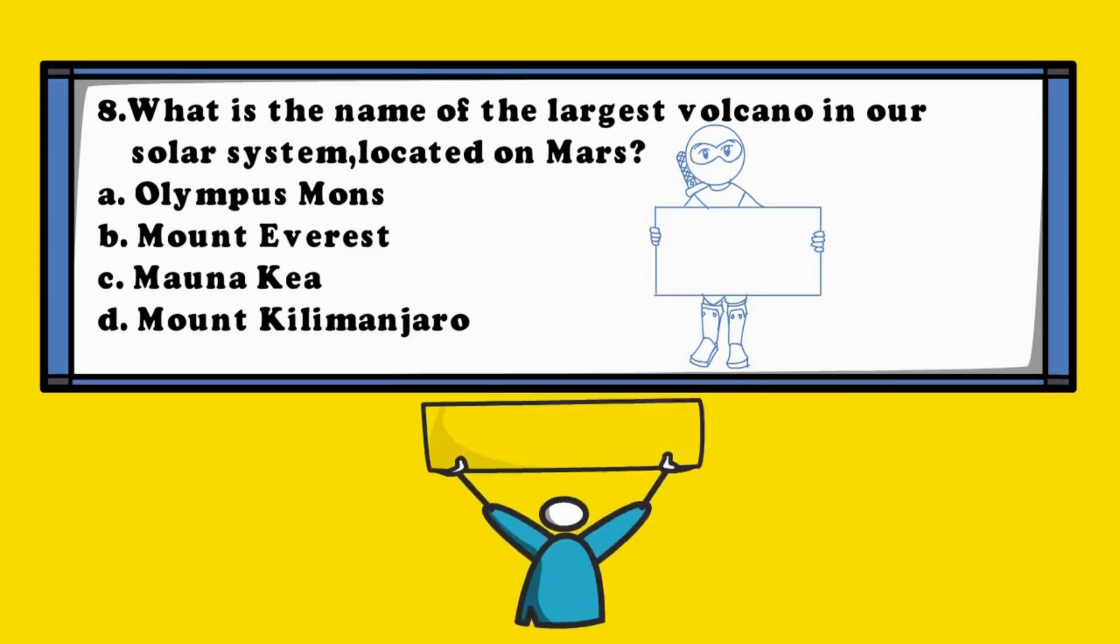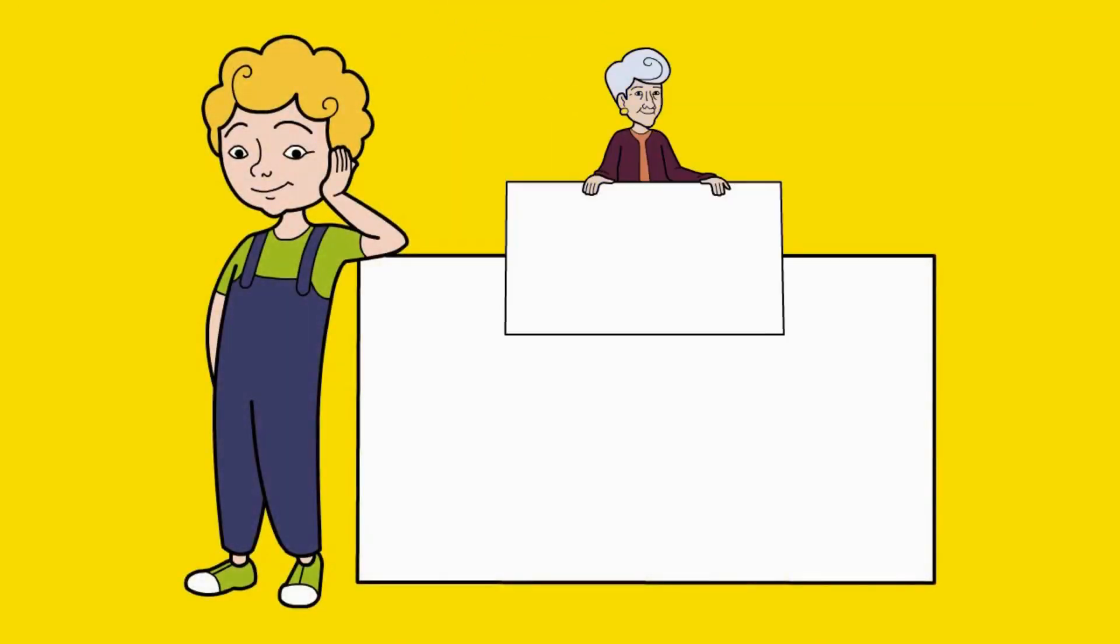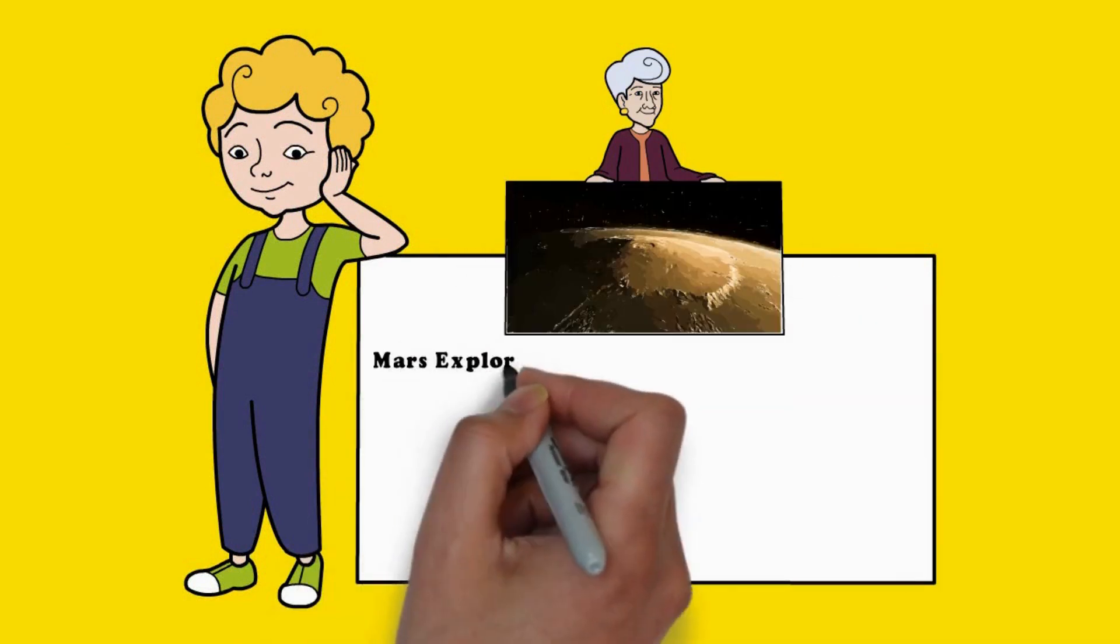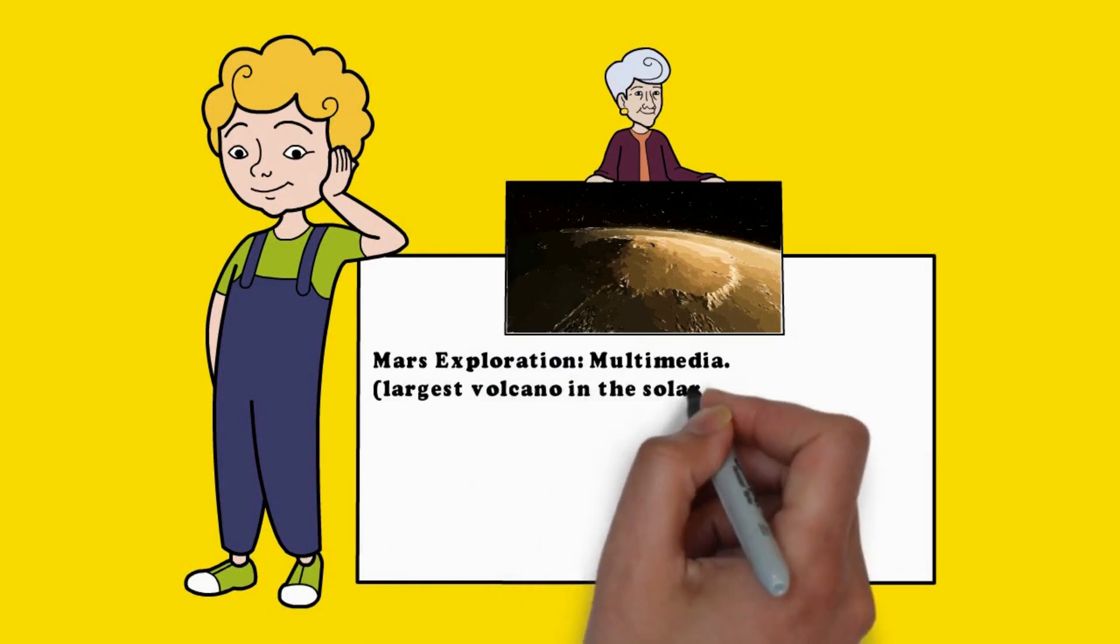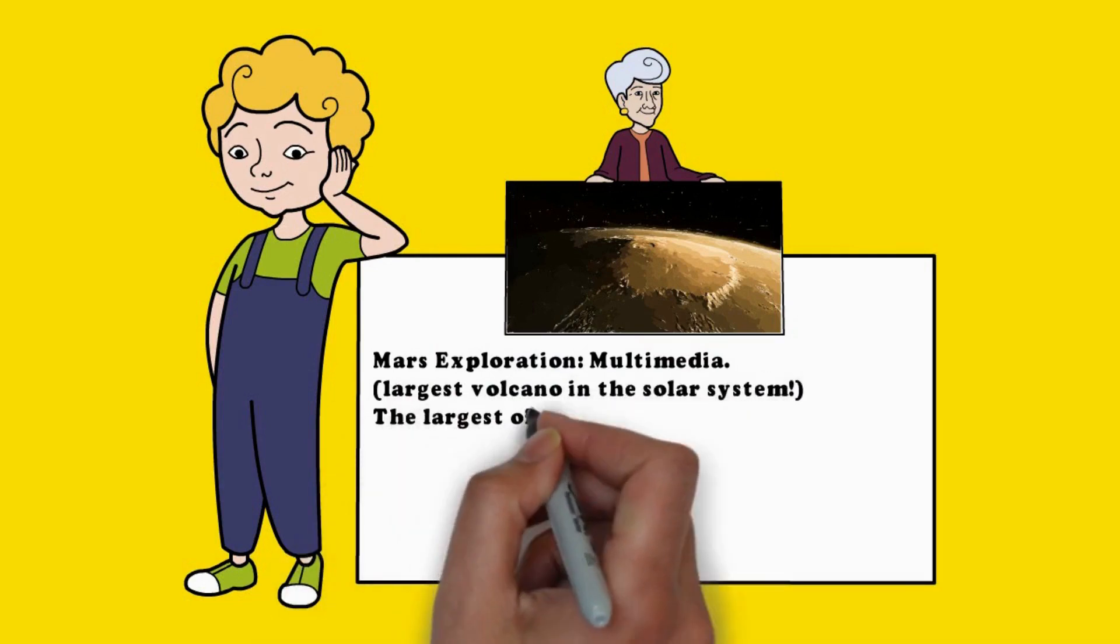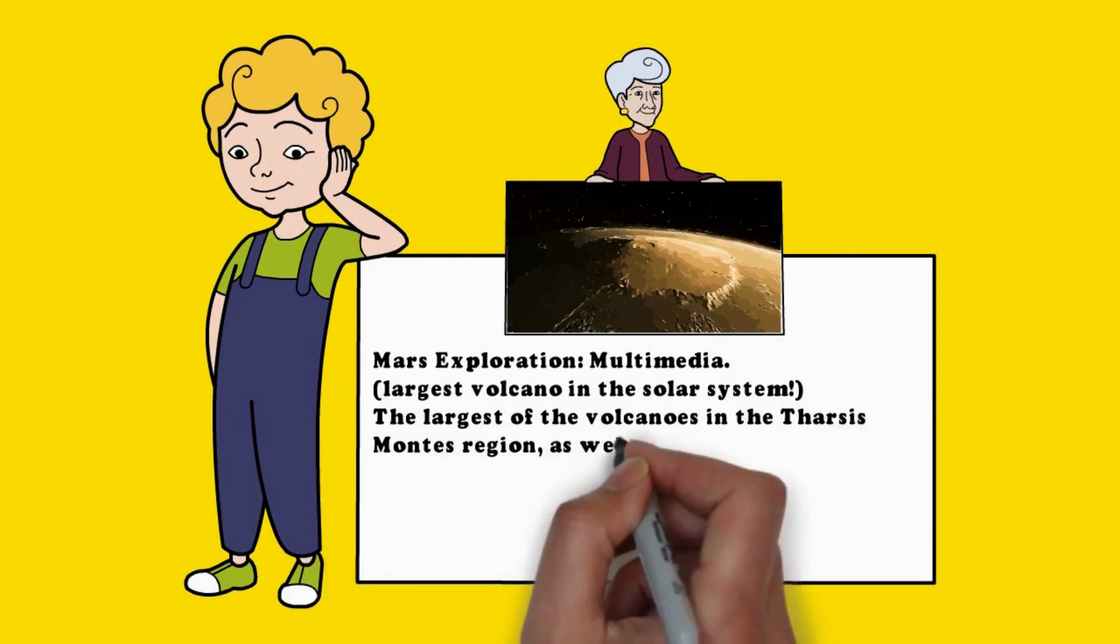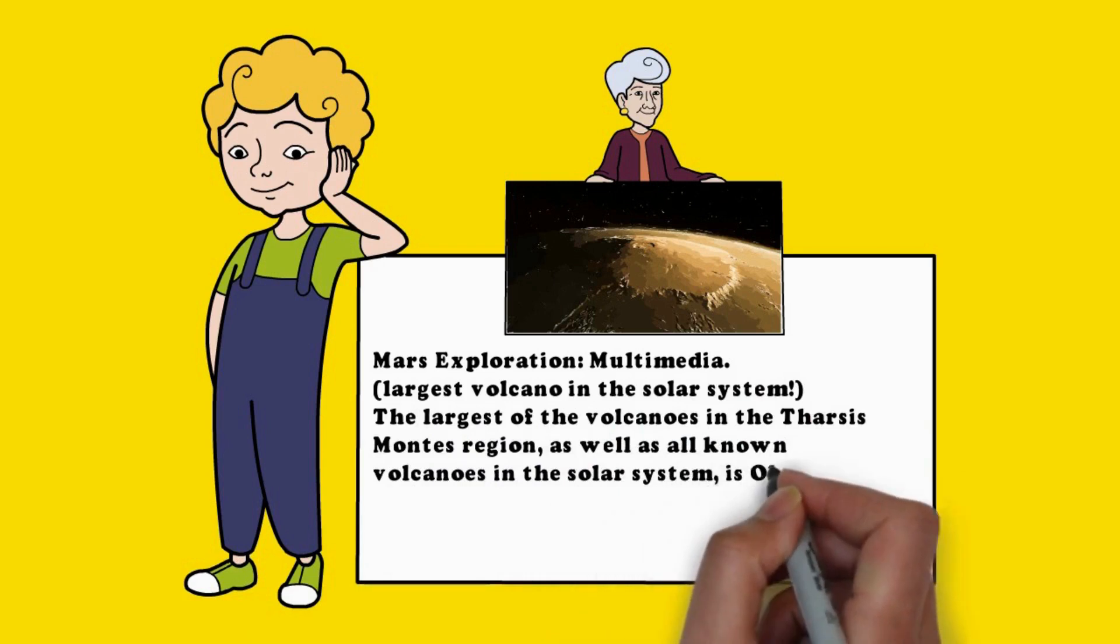The answer is A. Olympus Mons. The largest of the volcanoes in the Tharsis Montes region, as well as all known volcanoes in the solar system, is Olympus Mons.